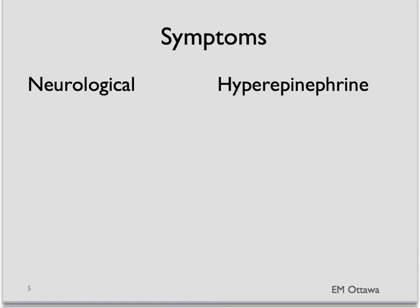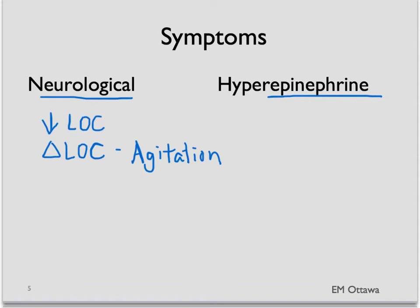Therefore, we need to know the symptoms of hypoglycemia. They are divided into two main categories: neurological symptoms, and symptoms due to high epinephrine in the body. Neurological symptoms can include decreased level of consciousness leading to lethargy or coma, change in level of consciousness such as confusion and agitation, seizure, and sometimes focal neurological findings that mimic a stroke.